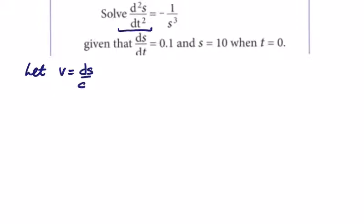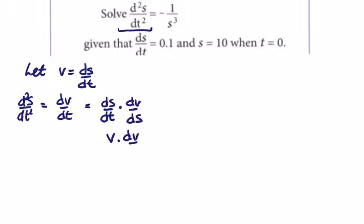So dv/dt, the second derivative here d²s/dt², is equal to dv/dt. And dv/dt is also equal to ds/dt times dv/ds, so here's my chain. I have ds/dt is v times dv/ds. This is equal to the second derivative, that's equal to, from the question, minus one over s cubed.